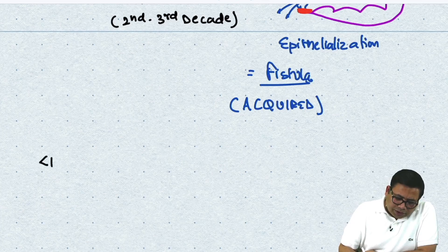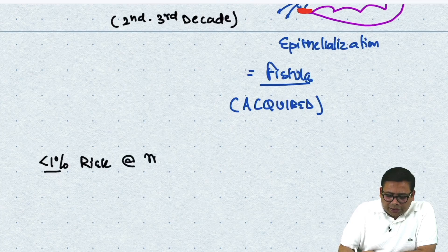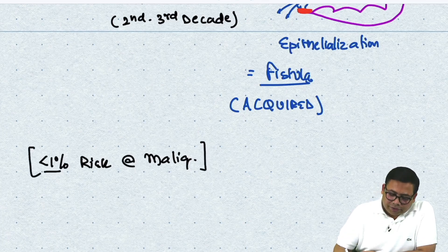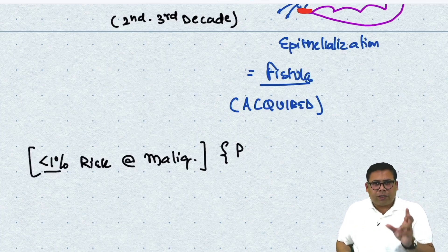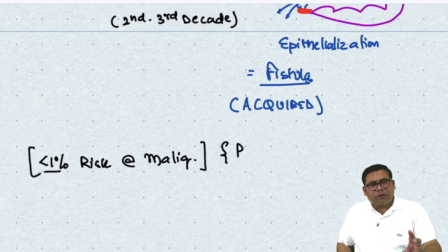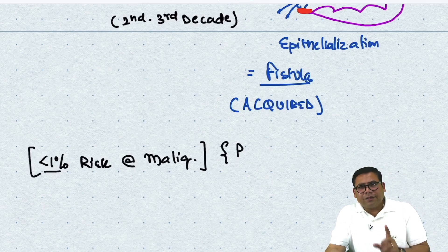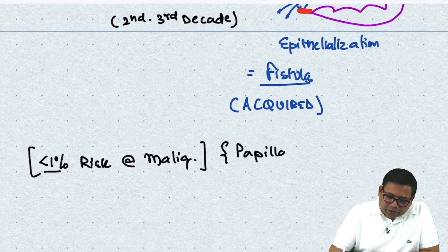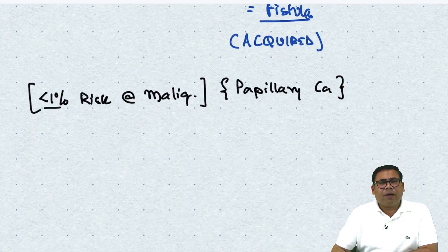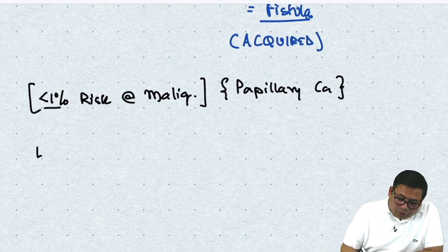The potential risk of malignancy in this cyst is less than one percent. Since it is part of the medial system of thyroid development — which contributes follicular cells — any follicular cell-derived cancer can arise, but medullary thyroid cancer can never arise. In your exams, the answer is papillary carcinoma is the cancer that can arise.